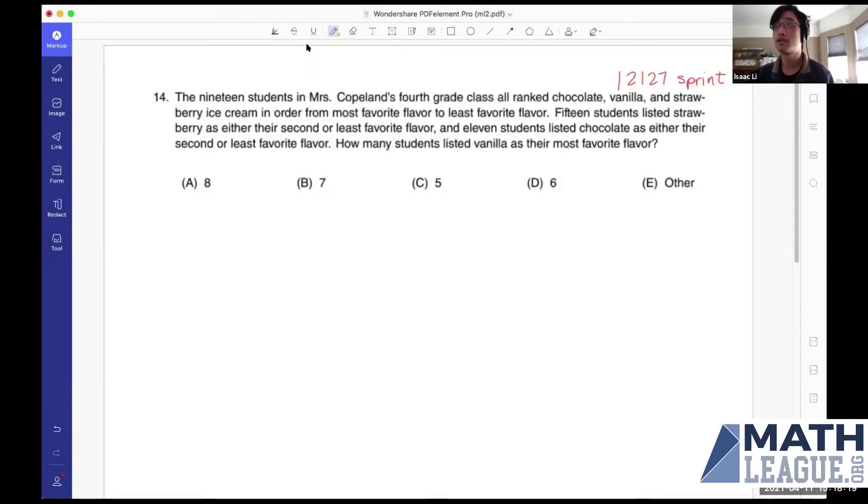So here's Sprint 14. The 19 students in Mrs. Copeland's 4-3 class ranked chocolate, vanilla, and strawberry ice cream in order from most favorite flavor to least favorite flavor.